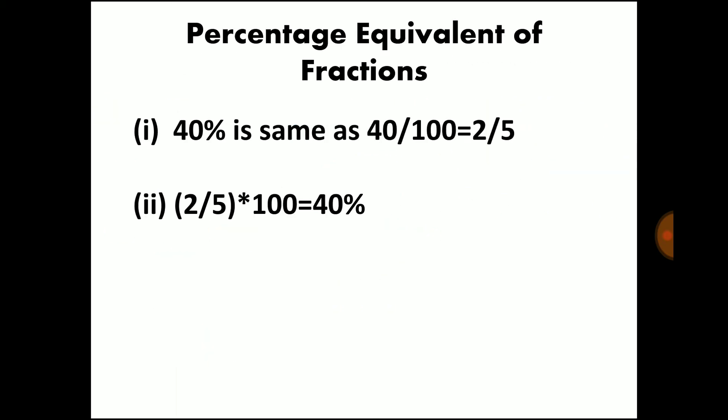Percentage equivalent of fractions. A fraction is another way in which the value of particular percentage is represented. In the first example, you have 40%. So 40% is same as 2 by 5. To convert a percentage into fraction, divide the percentage by 100. So 40 by 100 gives you 2 by 5. So 2 by 5 is the equivalent fraction of the percentage 40%.